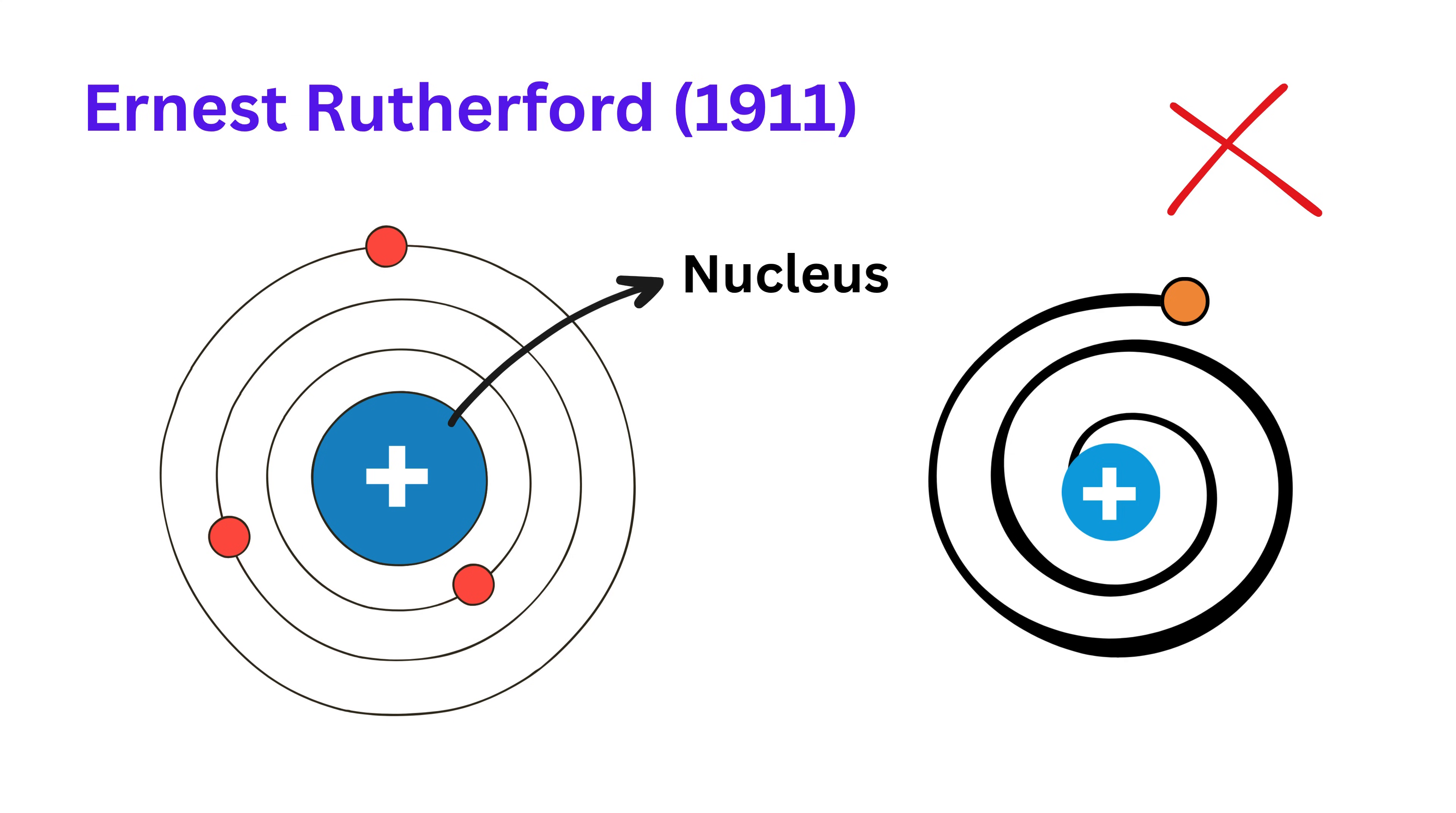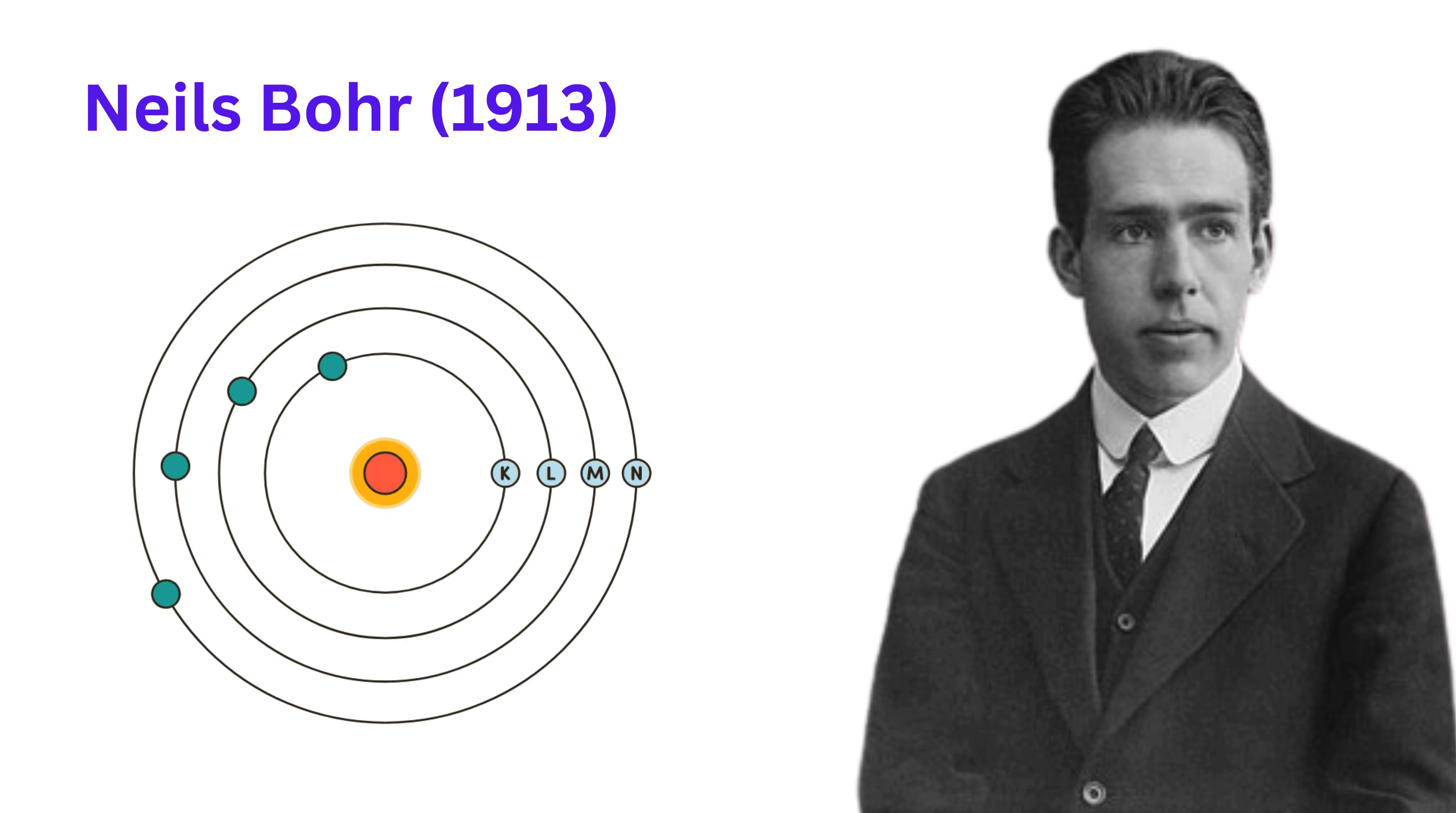So what's the answer? Enter Niels Bohr in the year 1913. He solved the problem with three big ideas. First, he said that electrons move in fixed circular paths called orbits, and as long as they stay in those orbits, they do not gain or lose energy.